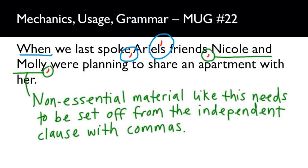I decided to make Nicole and Molly non-essential in this sentence — we all know Ariel's two best friends, like Nicole, Molly, and Ariel are the three amigos. Their names are non-essential because we know which two friends we're talking about. You can decide though: if Ariel is a social butterfly and you need to qualify which friends, then you would not use those commas. But I decided Nicole and Molly were non-essential for the sentence to make sense.